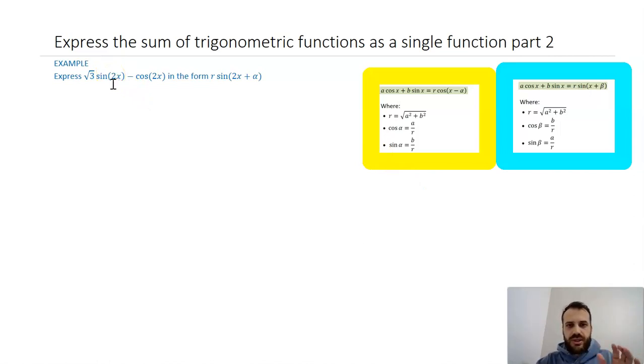Well, the easiest way to do it is to just let 2x equal some other letter, and then proceed as normal. Let 2x equal u, the equation becomes much simpler, root 3 sine u minus cos u, and I can start working with that.